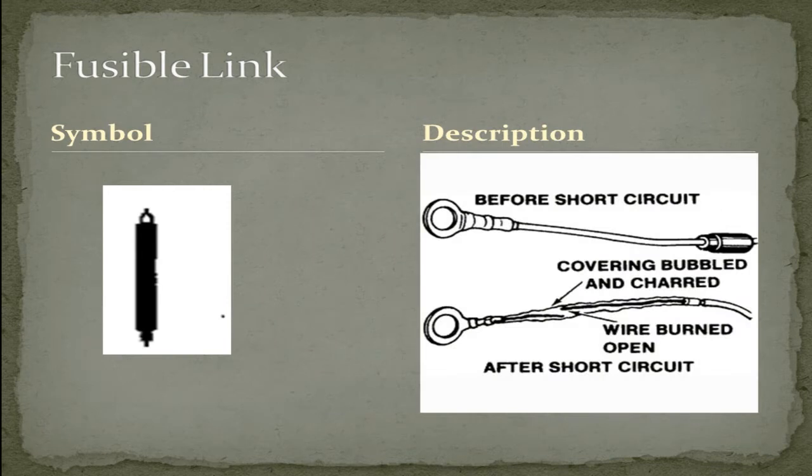Here's an illustration of a fusible link before a short circuit and after. Take notice that after the short circuit, the insulation is bubbled and charred and the wire inside had opened to protect the circuit.